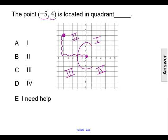This also matches up with the pattern that all points in quadrant 2 have a negative first number and a positive second number.